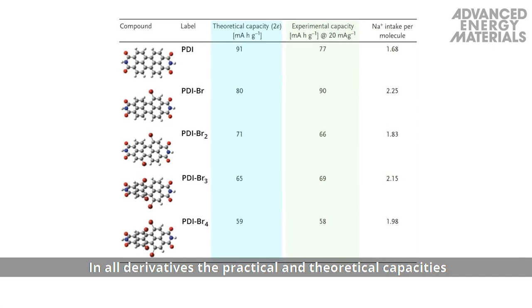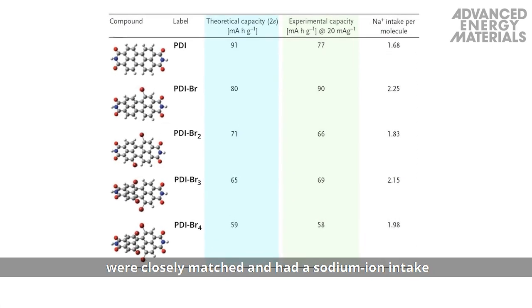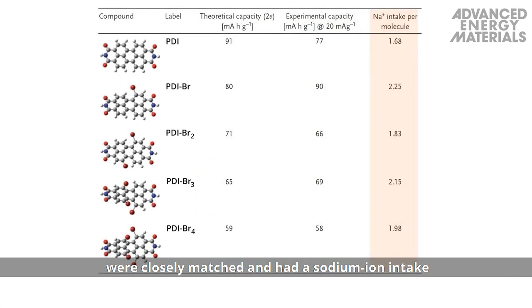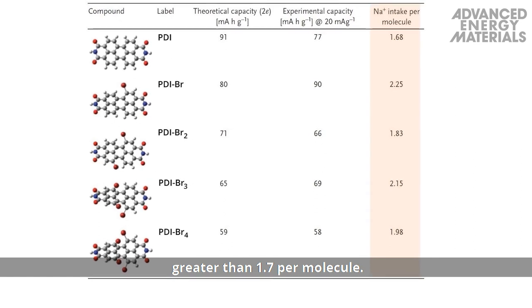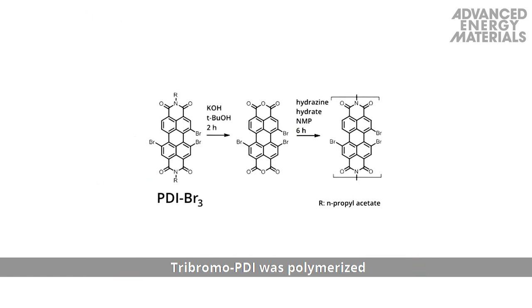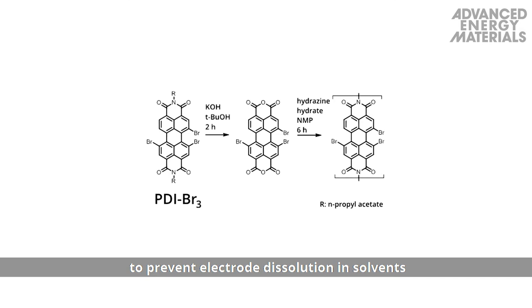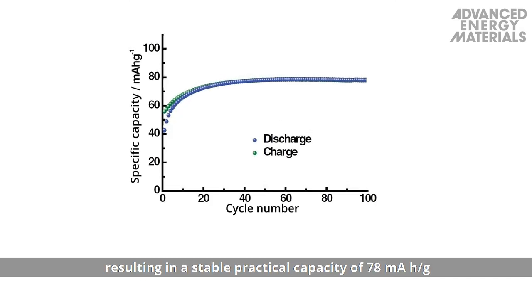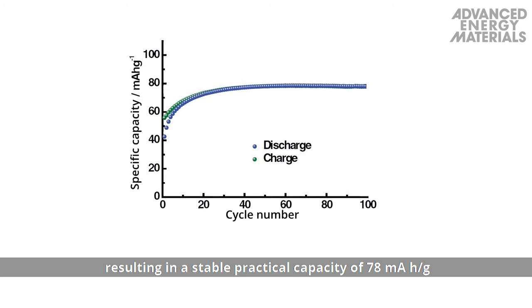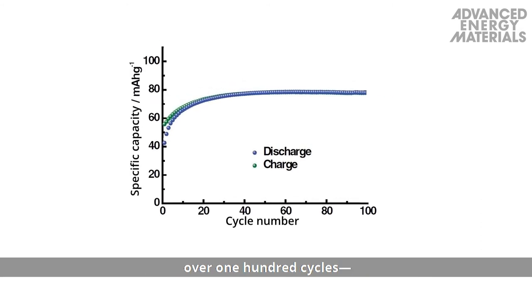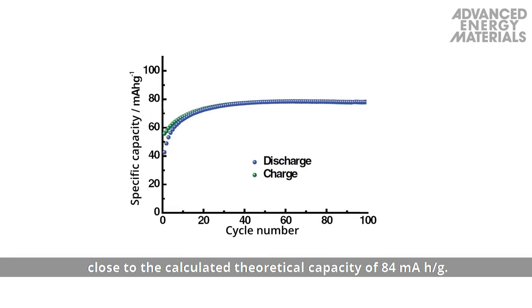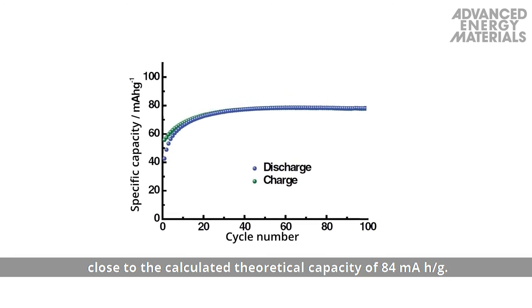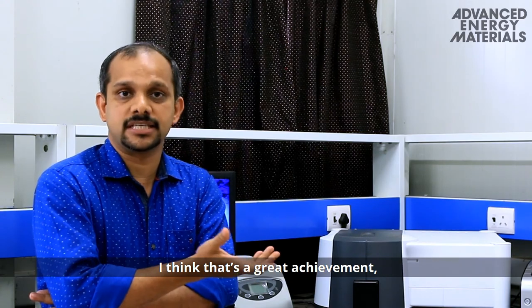In all derivatives, the practical and theoretical capacities were closely matched and had a sodium ion intake greater than 1.7 per molecule. Tribromo PDI was polymerized to prevent electrode dissolution in solvents during repeated cycling, resulting in a stable practical capacity of 78 milliamp hours per gram over 100 cycles, close to the calculated theoretical capacity of 84 milliamp hours per gram. I think this is a great achievement.